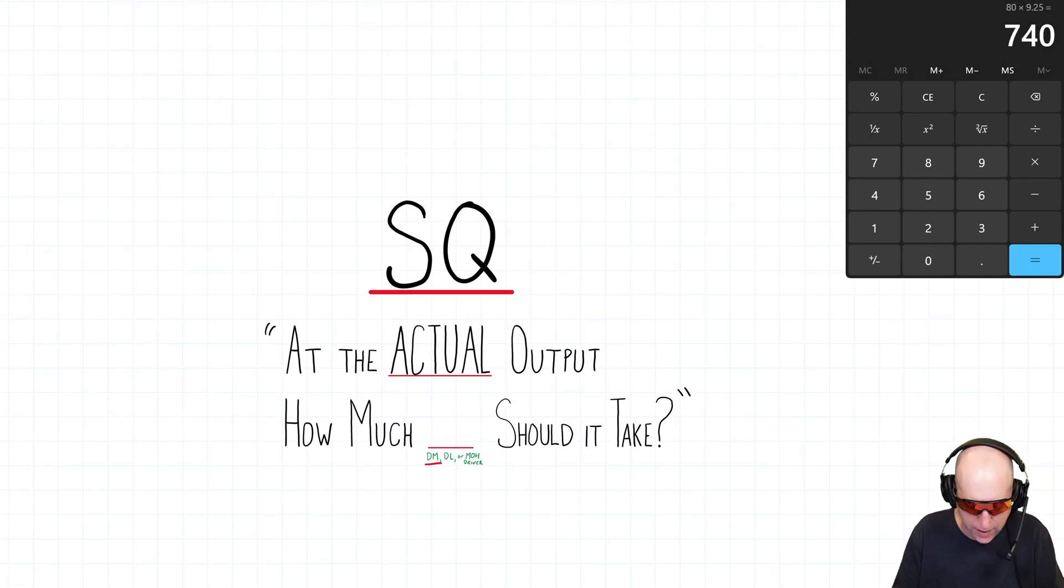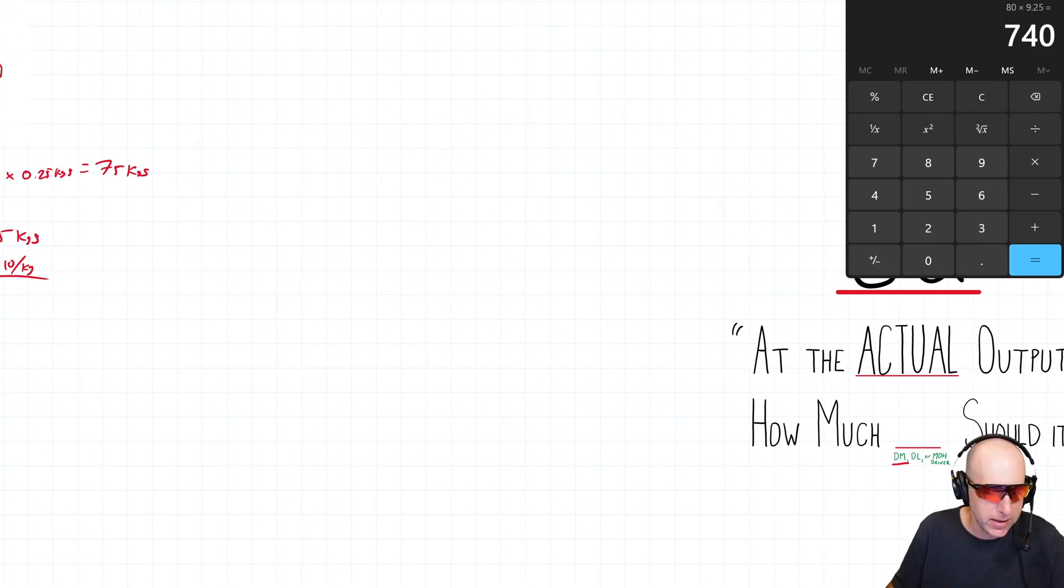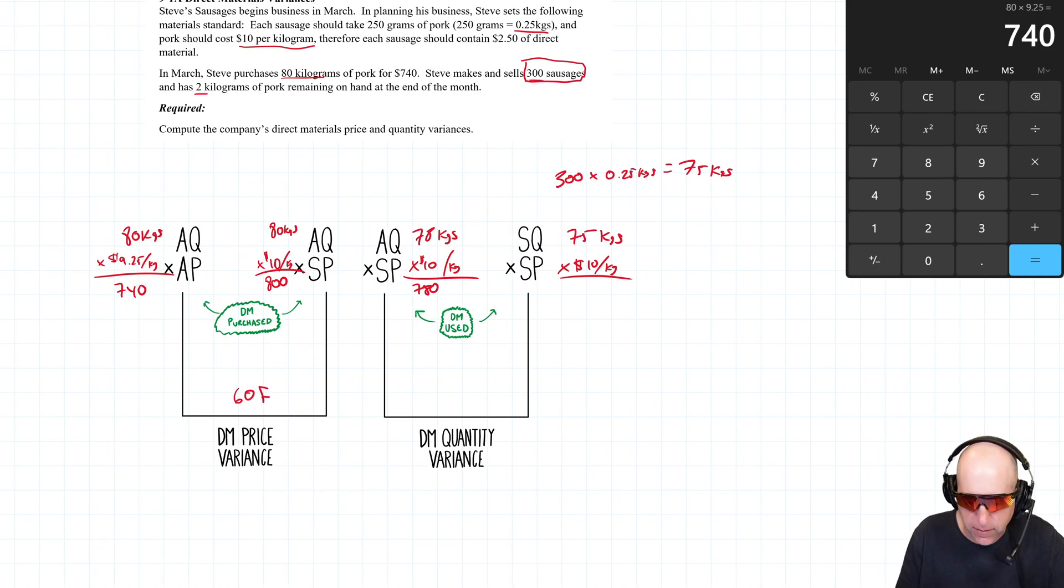And let's just return to this because you're going to have to do this in every problem. This is the one that trips students up when they're doing variances is the SQ. It's called standard quantity allowed at the actual level of output. So given the fact that Steve made 300 sausages, how much material should it have taken? And the answer is, should it have taken 75 kilograms? That's what Steve would have guessed it would have taken. So 75 times 10, that's 750. What's the variance 780 to 750? The variance is 30.